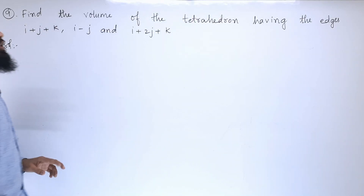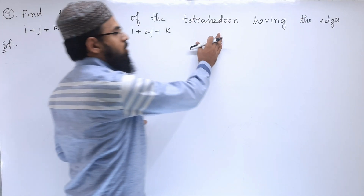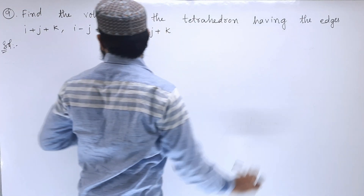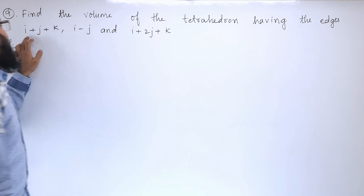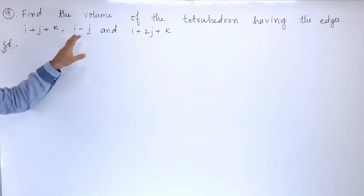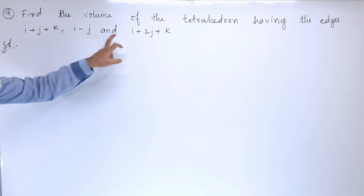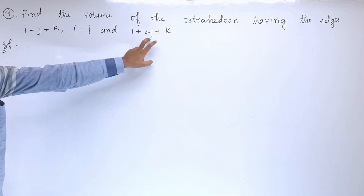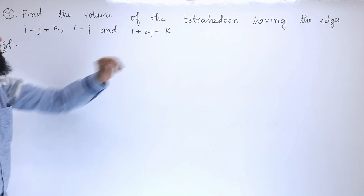Ninth problem: find the volume of the tetrahedron having the edges i cap plus j cap plus k cap, i minus j, and i plus 2j plus k.